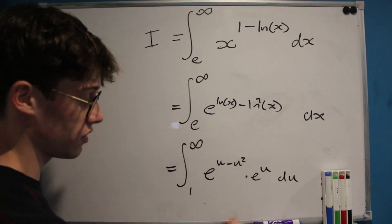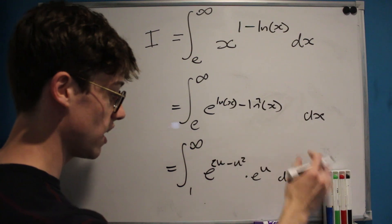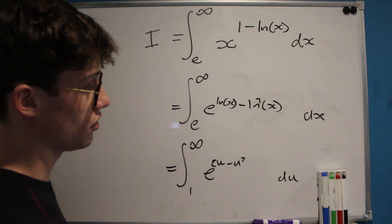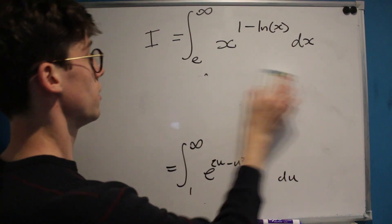And of course these bases are now the same, so we can add our u's together, and we now are considering the integral of e to the 2u minus u squared all with respect to u.